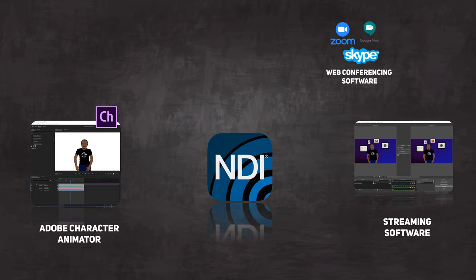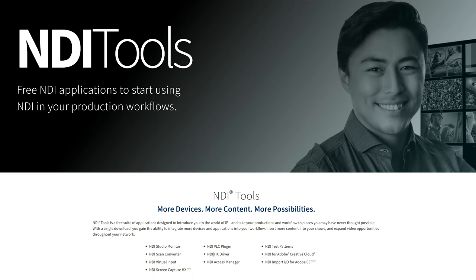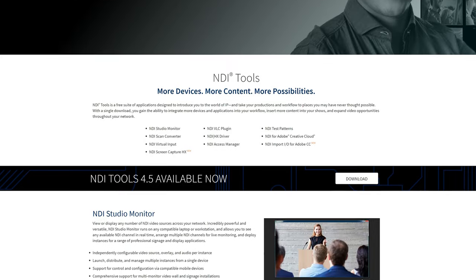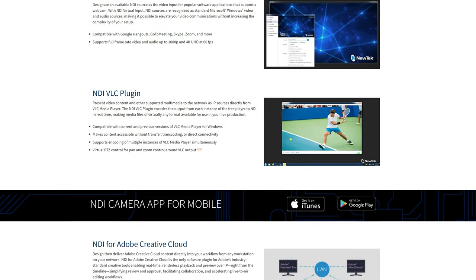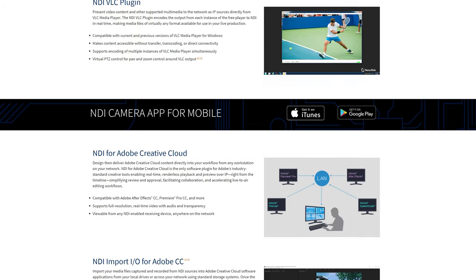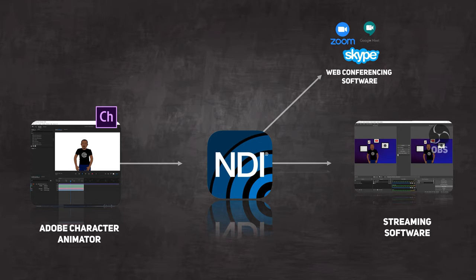There is a tool called NDI, or Network Device Interface. What this does is that it allows you to send video feed from one application to another — even if the application is on another computer, as long as you're in the same network and they both support the tool. Finally we're going to need a streaming software, and in my case I'll be using OBS. The links to everything I've mentioned are in the description.